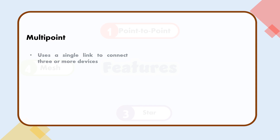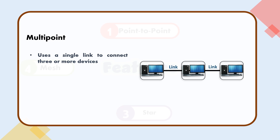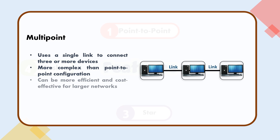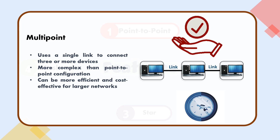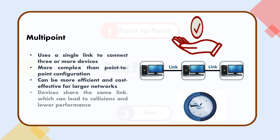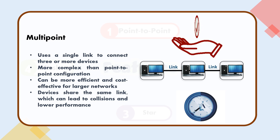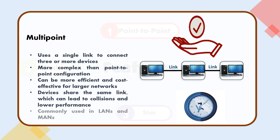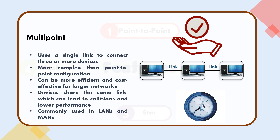Multipoint uses a single link to connect three or more devices. It is more complex than point-to-point configuration but can be more efficient and cost-effective for larger networks. Devices share the same link, which can lead to collisions and lower performance. It is commonly used in LANs and MANs.